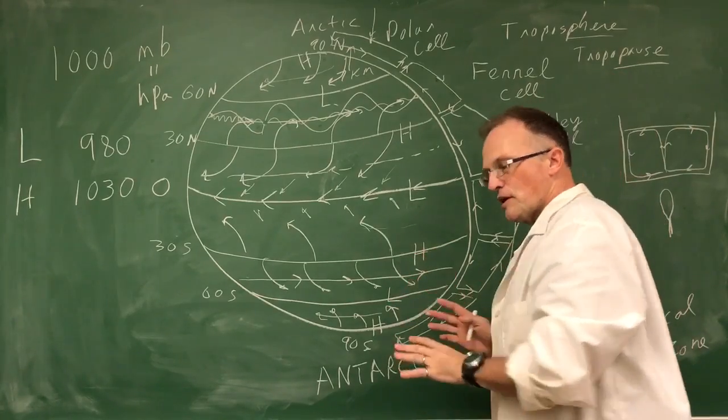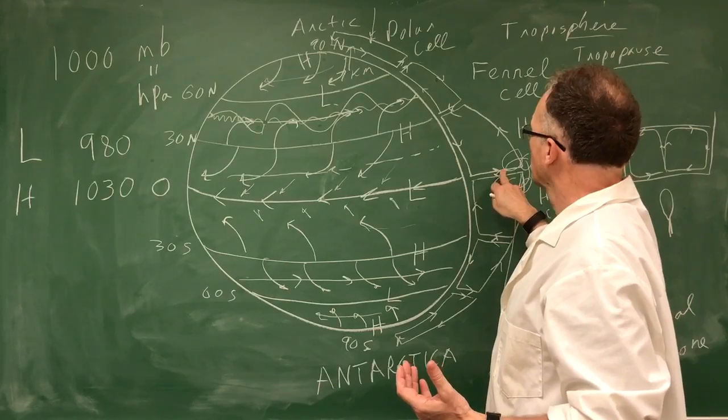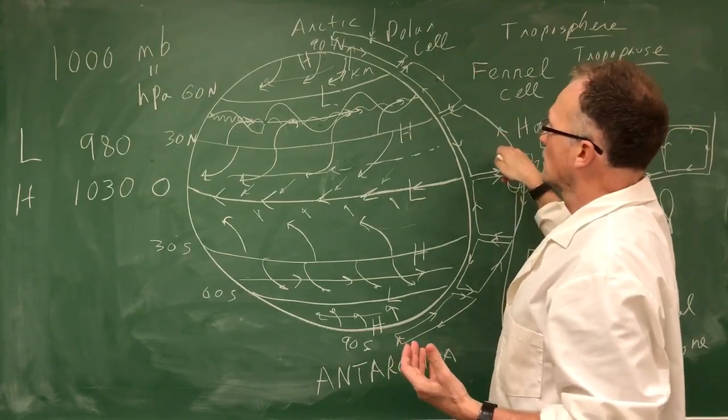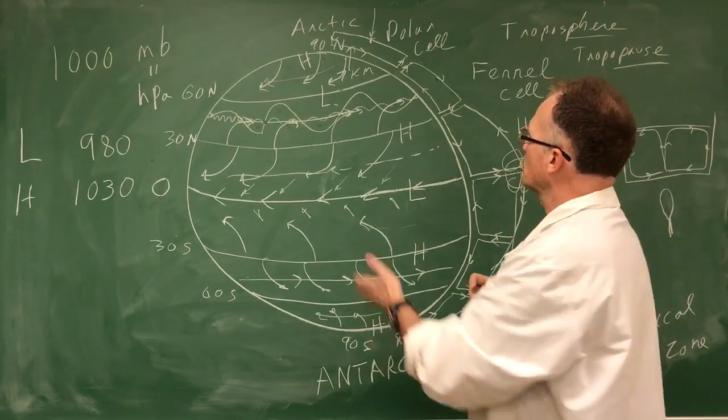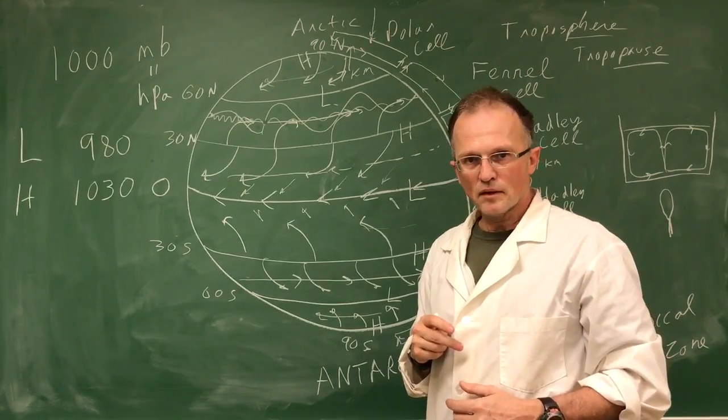So, turn this video off. Go to a piece of paper or a blackboard. Hot air rises. There's three cells. And things get deflected to the right in the northern hemisphere, left in the southern hemisphere. Thank you.